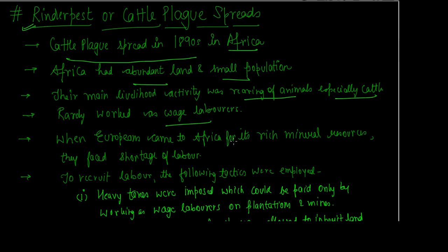When Europeans came to Africa, they were there for mineral resources and land. For mine extractions and plantations, they needed laborers, but they faced a shortage of labor. It was very difficult to find laborers because Africans had no need for wage work. So Europeans employed some tactics to recruit labor.